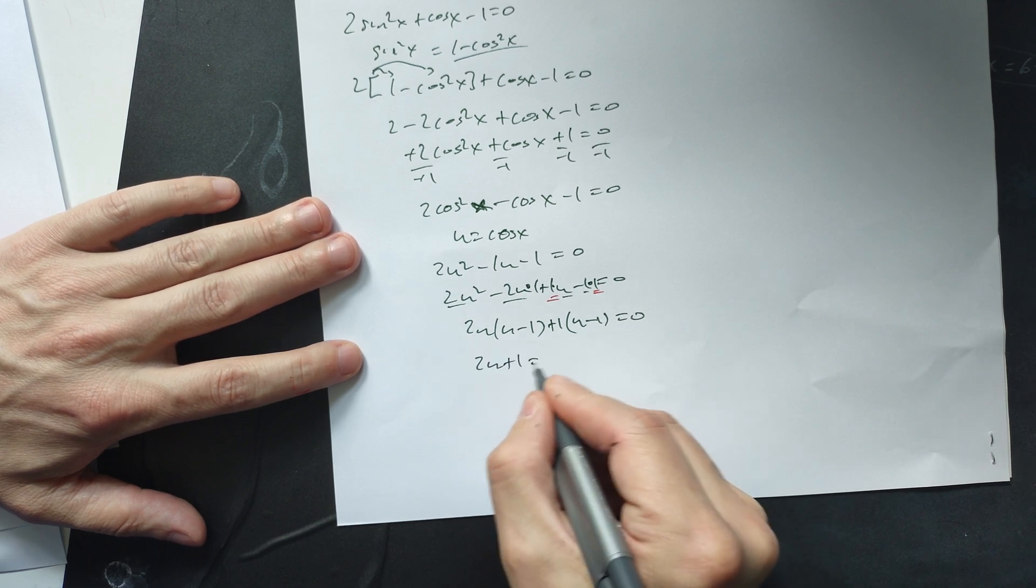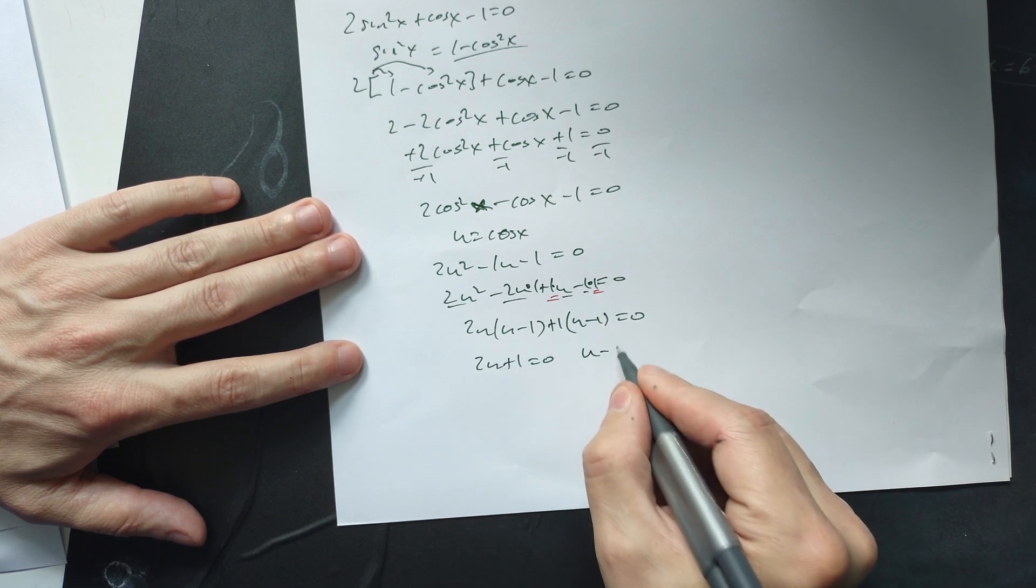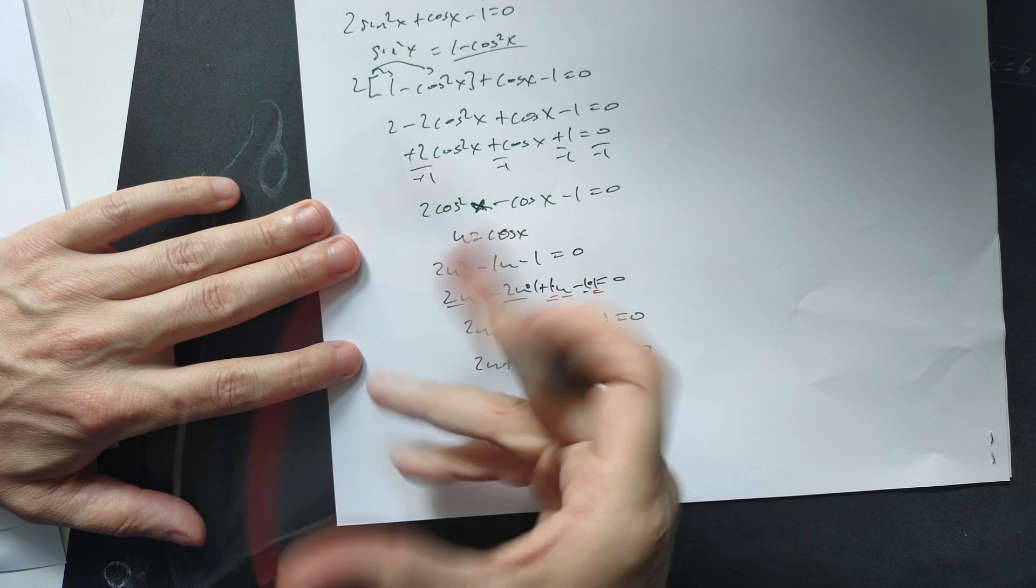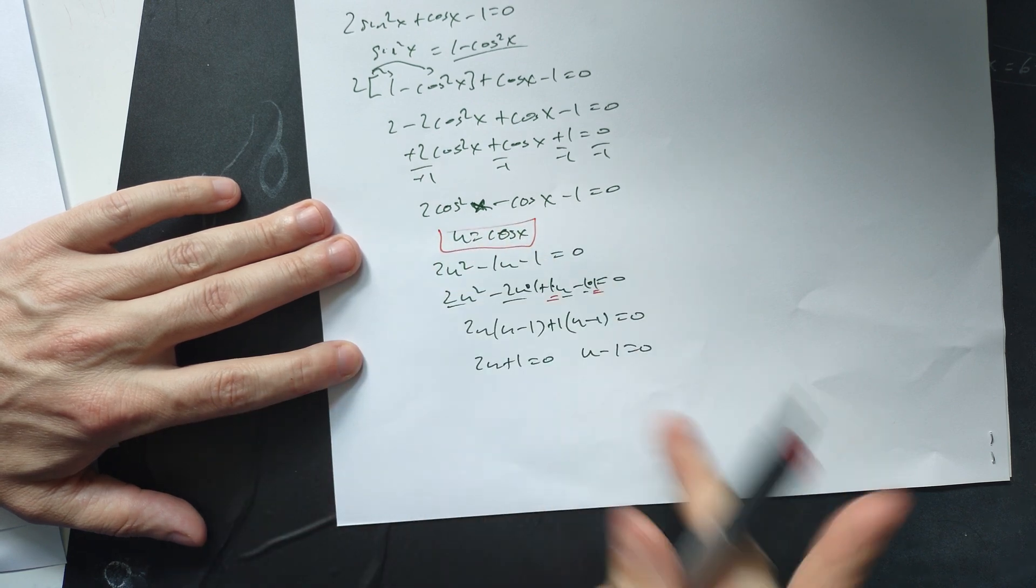So you group them. So 2u plus 1 is equal to 0 or u minus 1 is equal to 0. But remember from here that u was equal right here to cosine x.